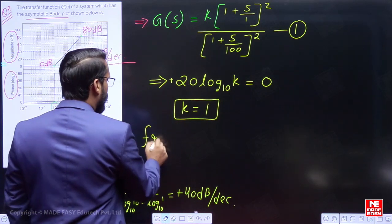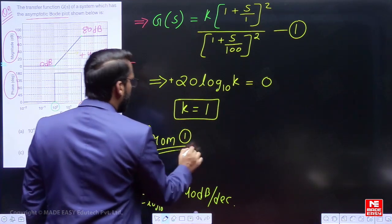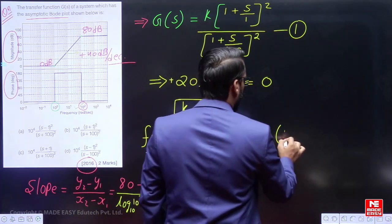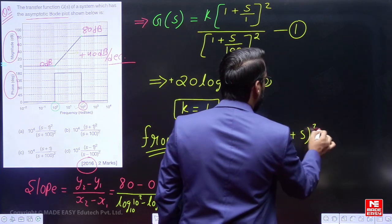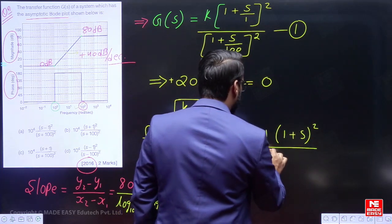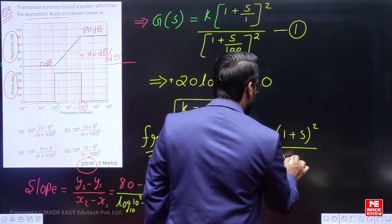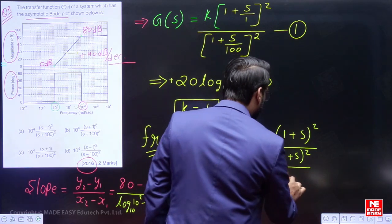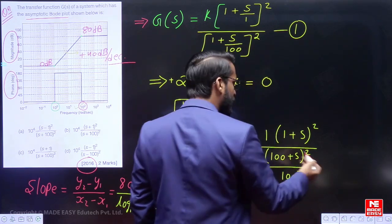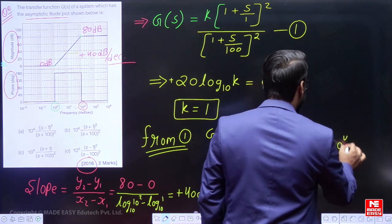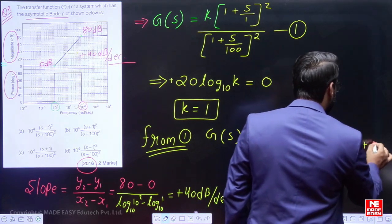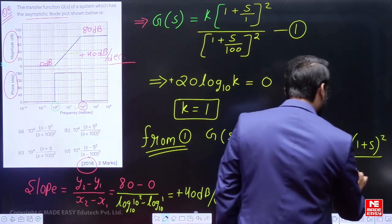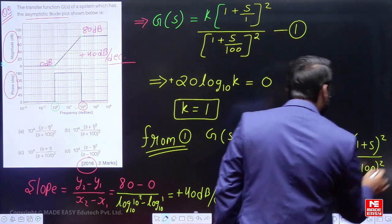From equation number 1, we can say G(s) = (1 + s)² divided by (1 + s/100)². This means G(s) = 10⁴ · (1 + s)² divided by (s + 100)².